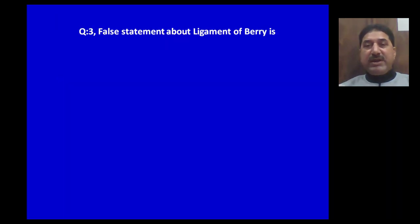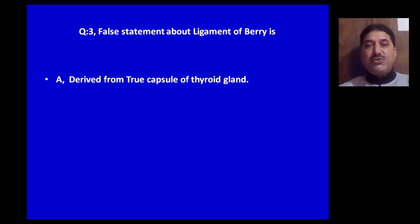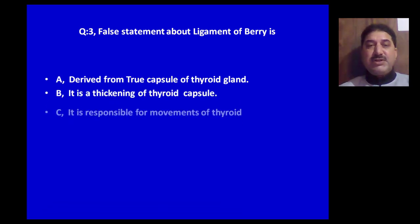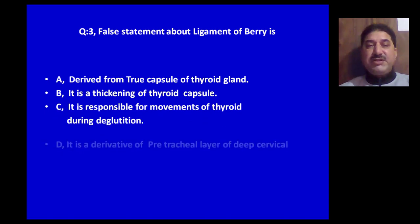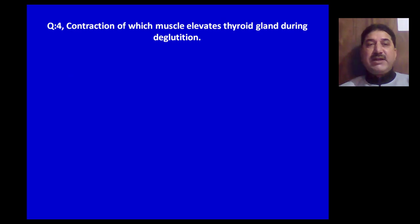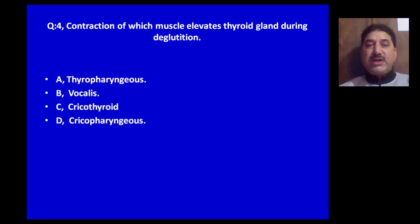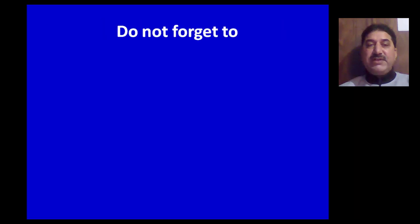False statement about the ligament of Berry: A) it is derived from the capsule of the thyroid gland, B) it is a thickening of the thyroid capsule, C) it is responsible for movements of the thyroid during deglutition, D) it is a derivative of pre-tracheal deep cervical fascia. A is the wrong statement, as it is derived from the false capsule of the thyroid gland. Contraction of which muscle elevates the thyroid gland during deglutition? A) thyropharyngeus, B) vocalis, C) cricothyroid, D) cricopharyngeus — cricopharyngeus is the correct option.